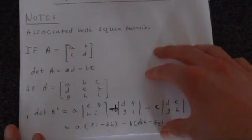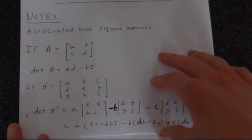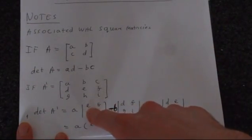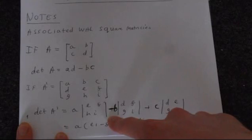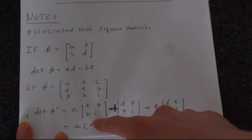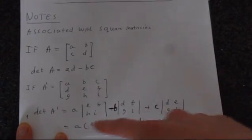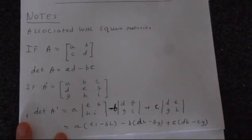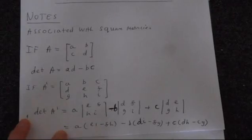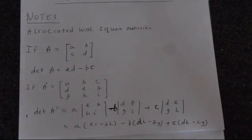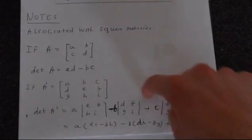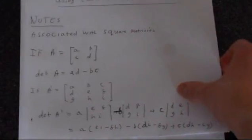And you can play around with that using the formula from the 2 by 2 — E times I minus F times H. You get this full formula if you do it all, and this is a pain to work with, so it's quite good to do this using a calculator, because it saves you having to do all that work. We'll just look at how to do that now.